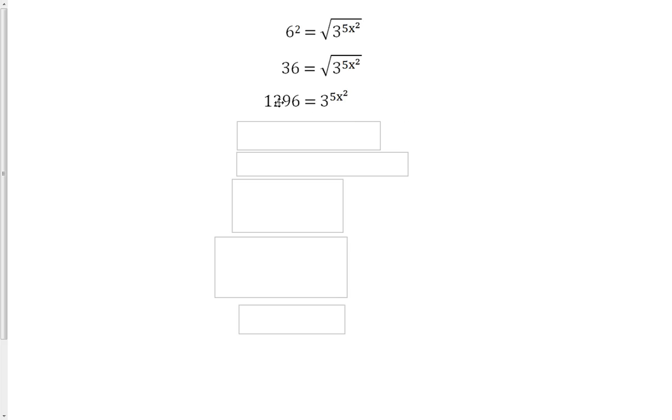Now we have an exponential with different bases. On the left, we have 1296 to the first power. And on the right, we have 3 to the 5x squared. So if we take the log of both sides, we have the log of 1296 on the left. And on the right, we have the log of 3 to the 5x squared.